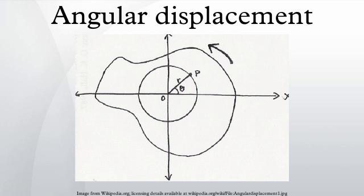As the particle moves along the circle, it travels an arc length s, which becomes related to the angular position through the relationship.